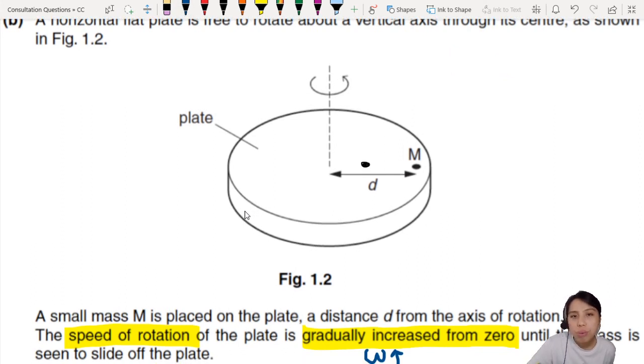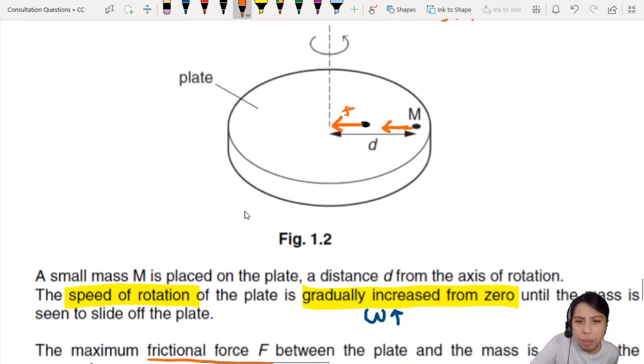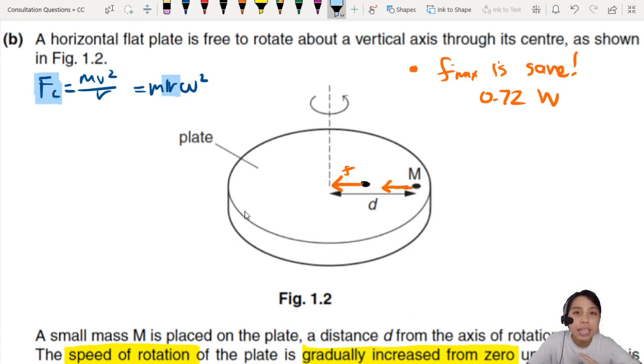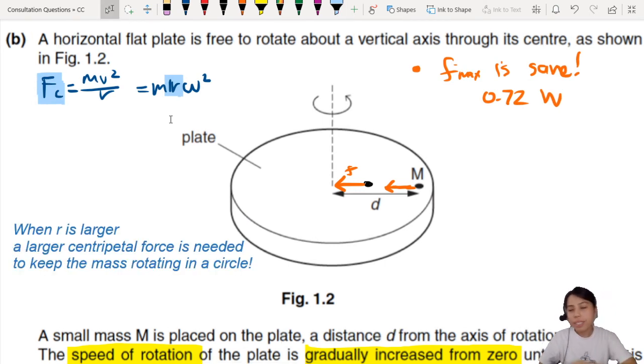The edge will leave first. But you need to suggest and explain. What is keeping these two masses rotating? Frictional force. This frictional force is the same for both of them. F maximum is the same, 0.72W. Which one needs a larger centripetal force to move in a circle?